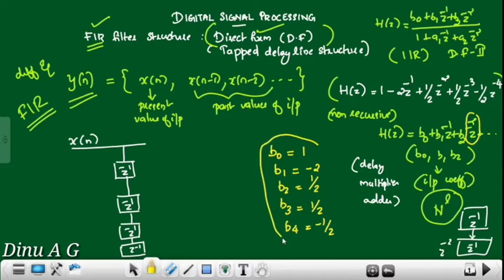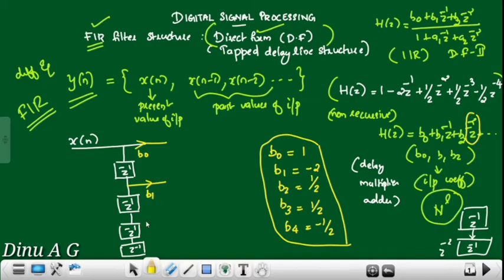So we have B0, B1, up to B4 on the input side. This corresponds to B1, this to B2, this to B3, and this to B4. We draw the delay elements, then the multipliers, and then we draw the adder.